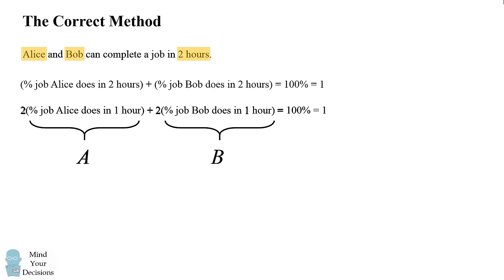This leads to the equation that 2A plus 2B equals 1. And that's how we can translate this. We can group this out to be two times the quantity A plus B equals 1.